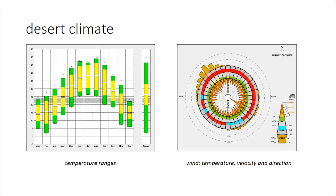In designing for Kuwait, we must consider the climate. Temperatures are hot, especially in the summer months June, July, and August. In other months, outdoor temperatures fall within the comfort band for at least part of each day. Winds are typically out of the northwest, passing over the Gulf and the Central Business District.